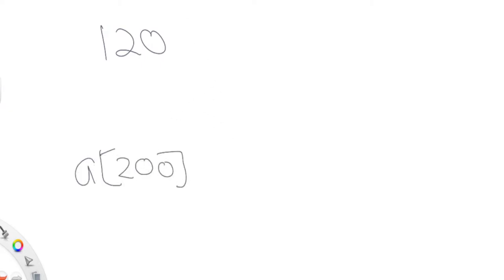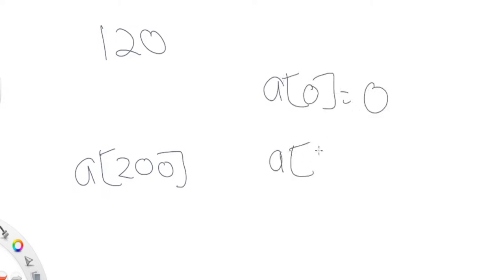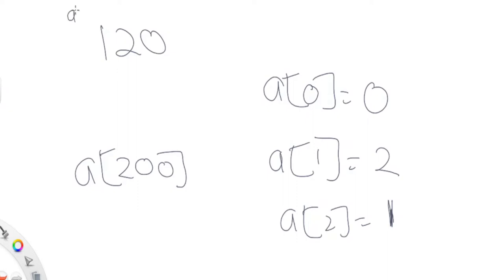Let's say I have a number 120. I'm going to create an array of size 200 with all zero values. Array index 0 is going to have value 0, array index 1 is going to have value 2, and array index 2 is going to have value 1. So 120 is going to be represented as an array of size 200, where index 0 is the ones place, index 1 is the tens place, and index 2 is the hundreds place.